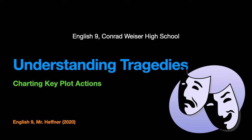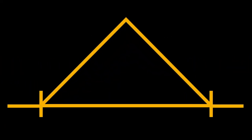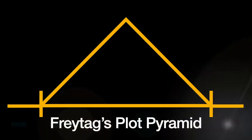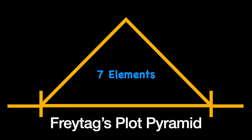Today our perspective of what a comedy is differs from what it was in Shakespeare's time, so let's take a look at the plot pyramid first. Some people will call this Freitag's plot pyramid. Gustav Freitag was a German playwright in the 19th century who was the first to diagram something like this and start putting names to the different elements of plot. It's been modified considerably since his time, so we might simply call it the plot pyramid.